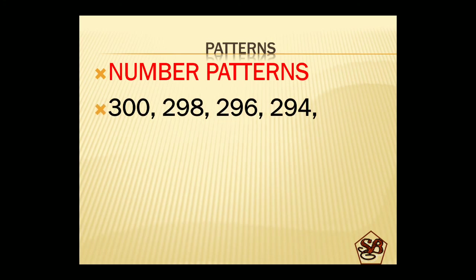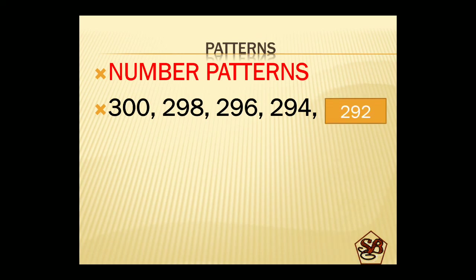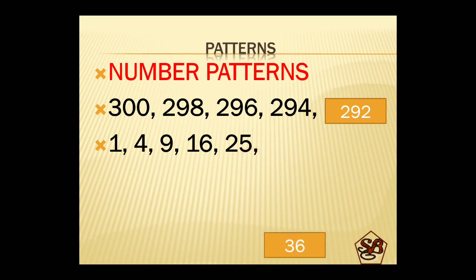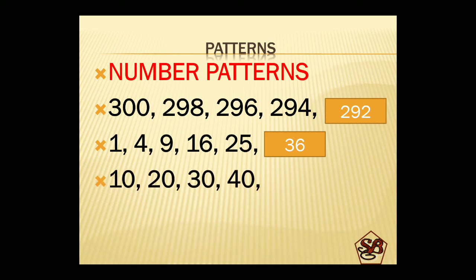Number patterns apply some logic. For example: 300, 298, 296, 294 — in each case there is minus 2, so the next number will be 292. Then: 1, 4, 9, 16, 25 — these are the square numbers: 1×1=1, 2×2=4, 3×3=9, 4×4=16, 5×5=25, so the next will be 6×6=36. And 10, 20, 30, 40 — this one is very easy, plus 10, so the next is 50.